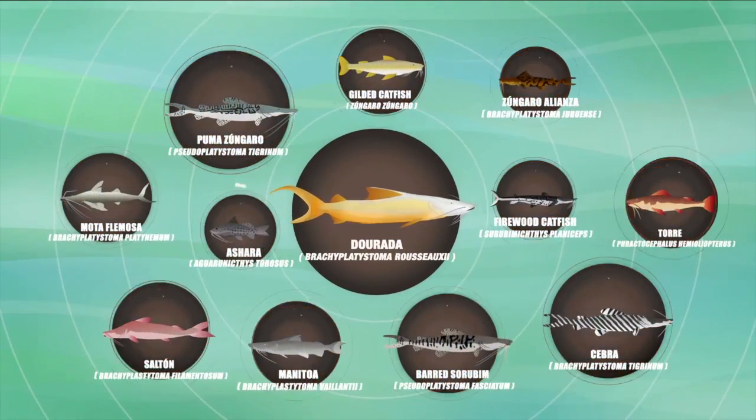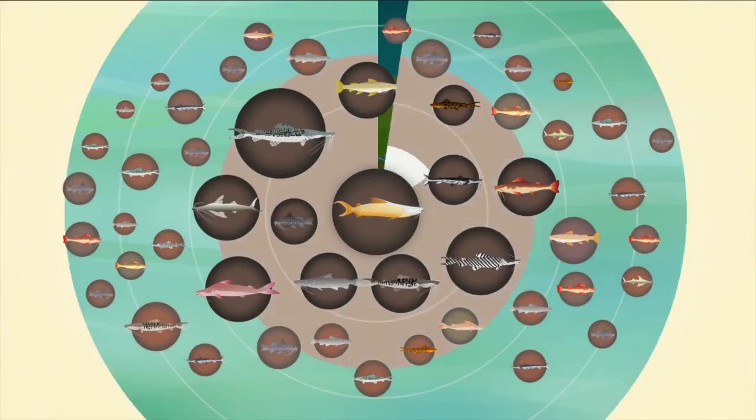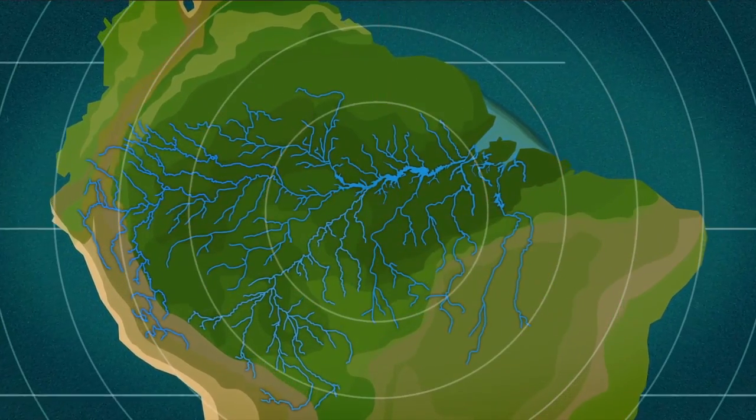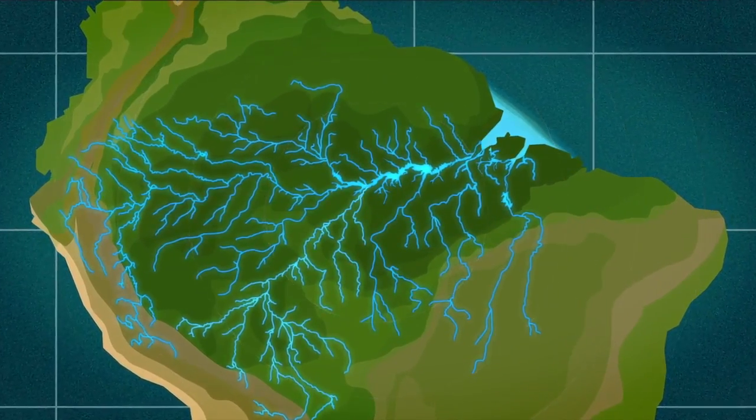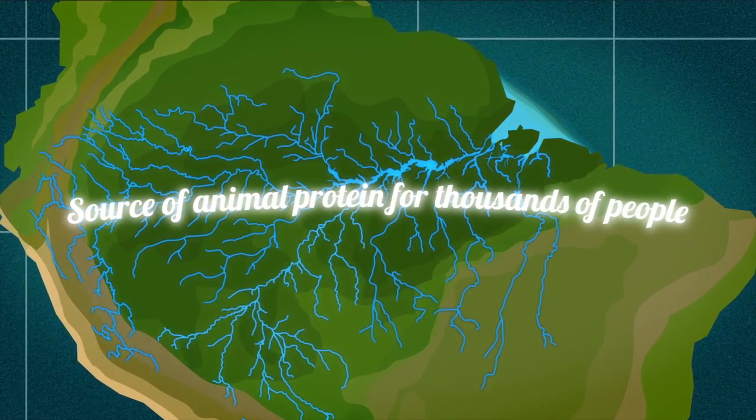The Dorada is one of the 12 large species of catfish in the Amazon, and one of the more than 50 species of migratory fish that call the Amazon waters home and are a major source of animal protein for thousands of people.